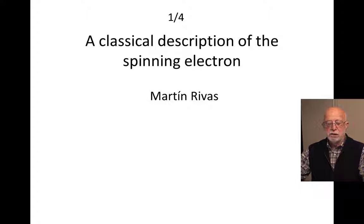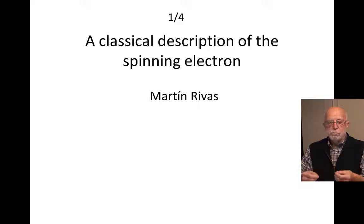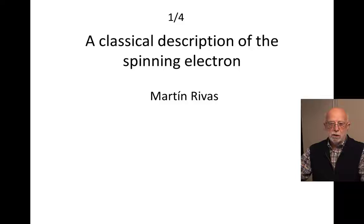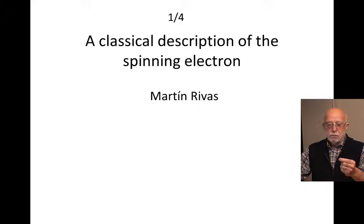This is the first lecture of a series of four lectures concerning the classical description of the spinning electron. The electron is an elementary particle and therefore, as it is considered one of the ultimate objects in the division of matter, it is a very simple material object. The usual classical description of the electron, taking this idea of simplicity, is just by assuming that the electron is described by the simplest geometrical object — the point. We used to deal with electrons by considering them points where we attach to them the mass and the charge of the electron.